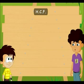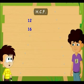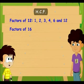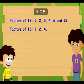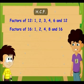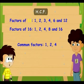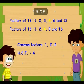Let's try one more. Can you find the HCF of 12 and 16? The factors of 12 are 1, 2, 3, 4, 6, and 12. The factors of 16 are 1, 2, 4, 8, and 16. The common factors of 12 and 16 are 1, 2, and 4. So the highest common factor of 12 and 16 is 4.